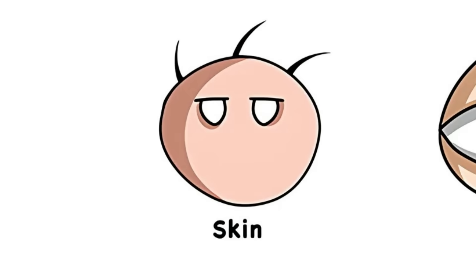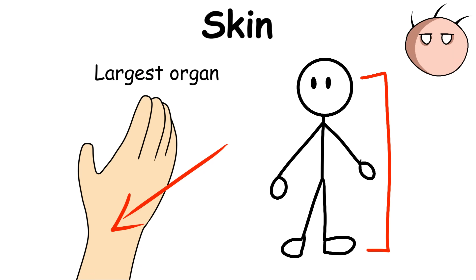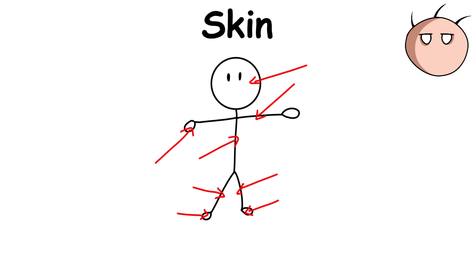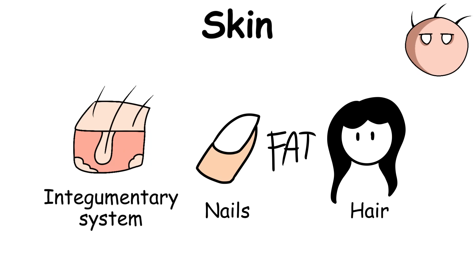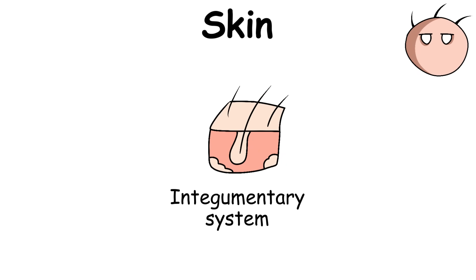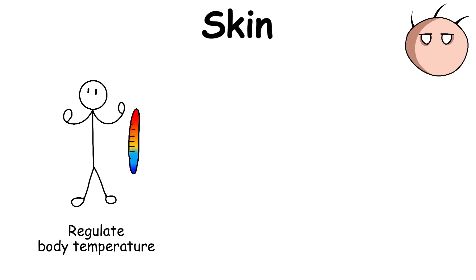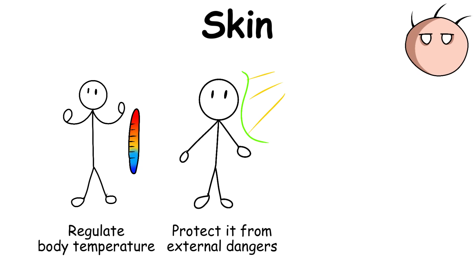Skin is the largest organ in the body because almost all of the body except for the external cavities is covered by skin. The skin forms part of the integumentary system, including nails, fat, and hair. The role of the integumentary system is to regulate body temperature, protect it from external dangers, and produce vitamin D.